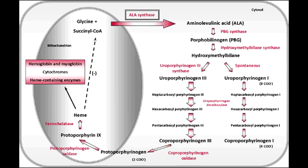The next step in heme synthesis is where Coproporphyrinogen 3 becomes Protoporphyrin. The last step is where Protoporphyrin combines with iron to become heme. The enzyme that catalyzes this final reaction is ferrochelatase. Ferrochelatase is inhibited by lead poisoning.